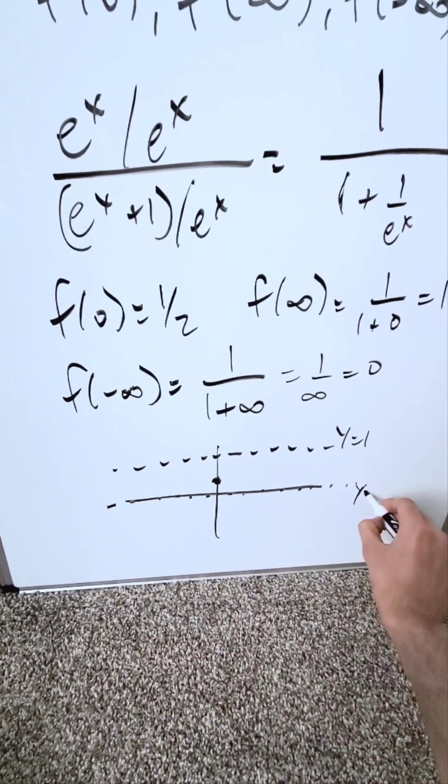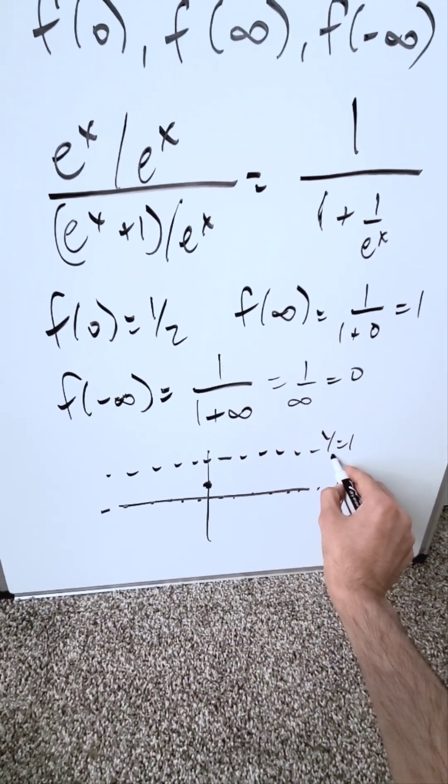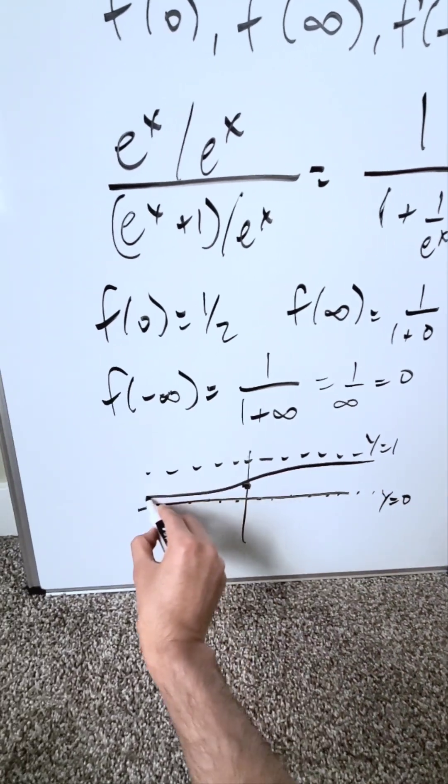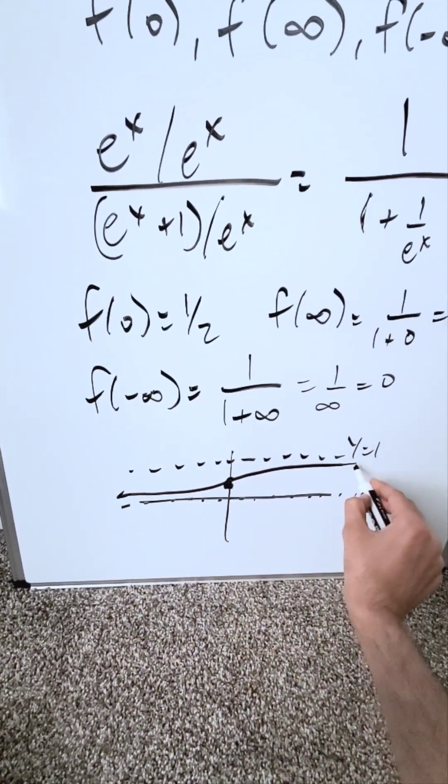That right there is a horizontal asymptote, and your function is squeezed right in between. It would look something like this. You'll have a y-intercept here at 0 comma 1 over 2.